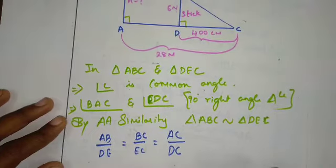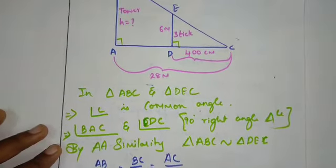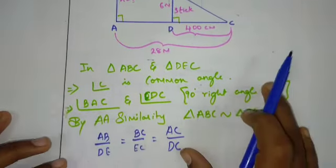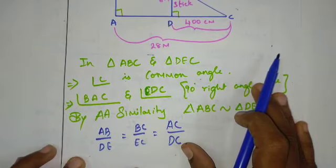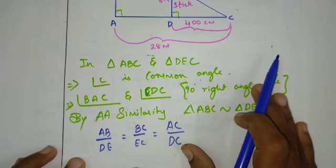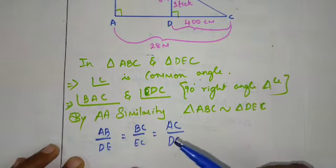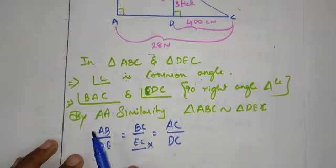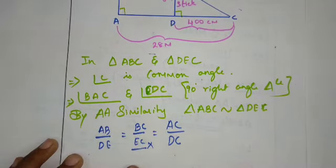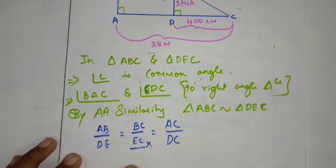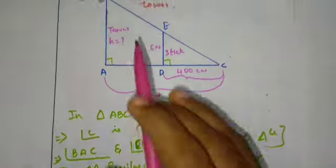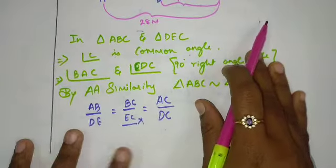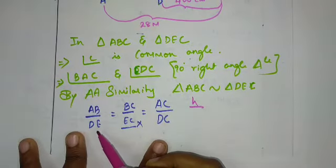Corresponding sides, you can see in the diagram. Practice this. So what values do we have? Looking at the diagram, we can see BC and EC.